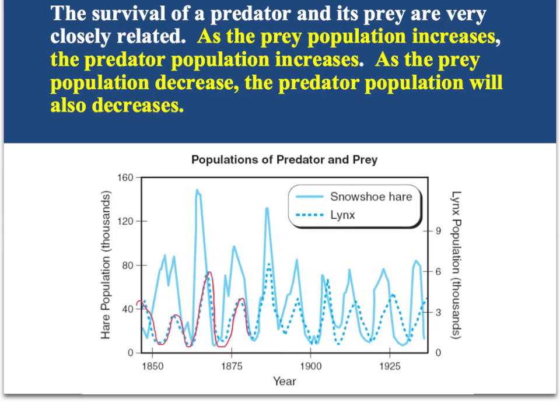This line here represents the predator, and the solid blue line represents the prey. As the prey population increases in size — looking at the snowshoe rabbits or whatever this graph shows — the predator population increases as well. As the prey population decreases, the predator population decreases too. That is it for our lecture on adaptations of predators and prey.